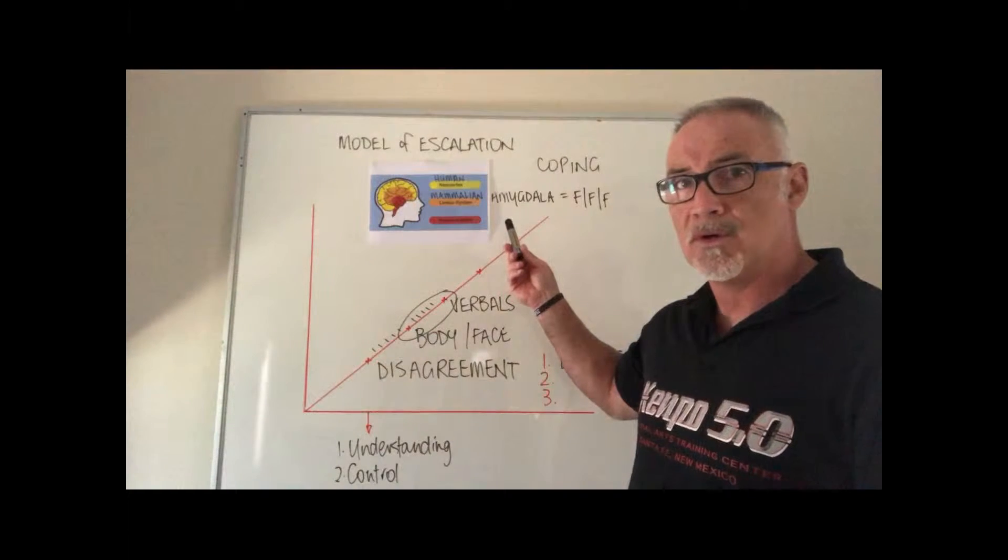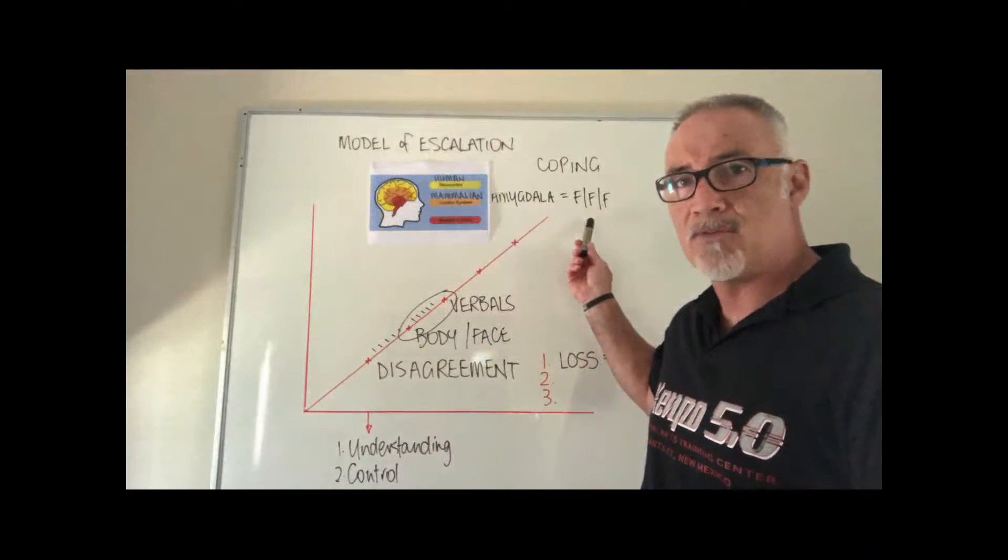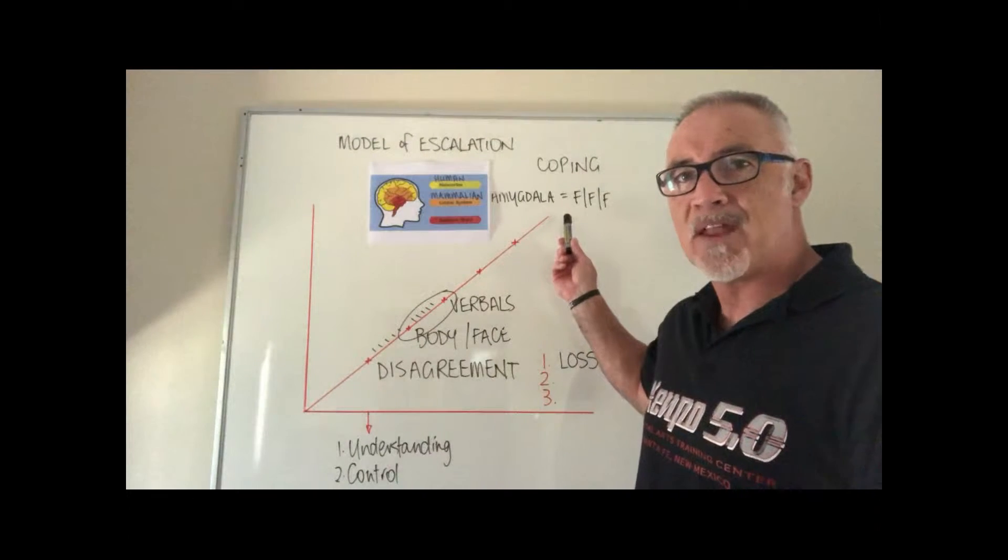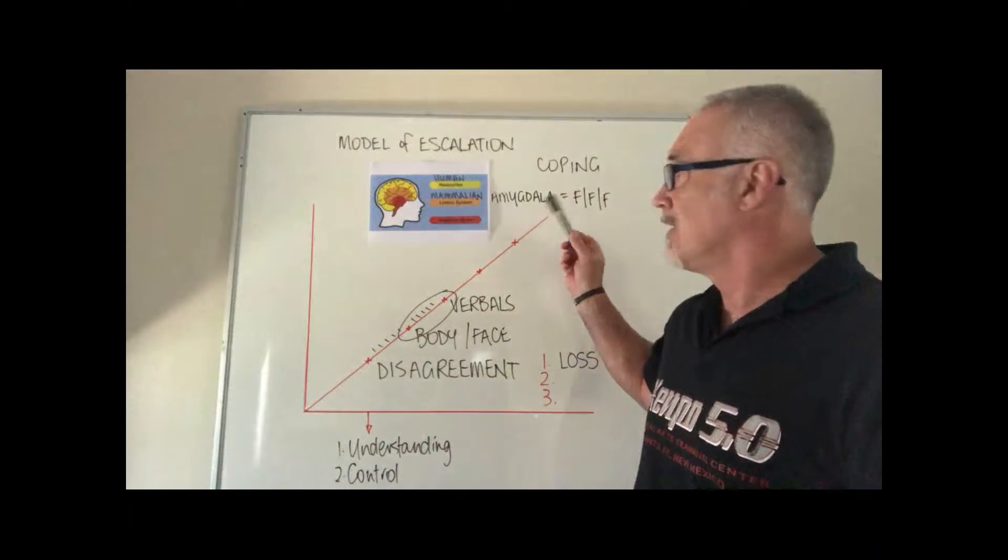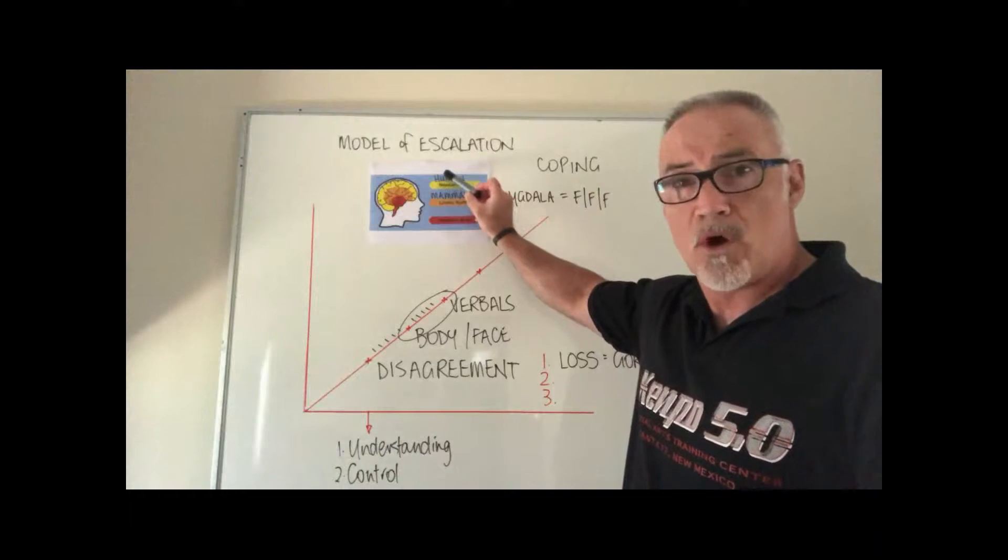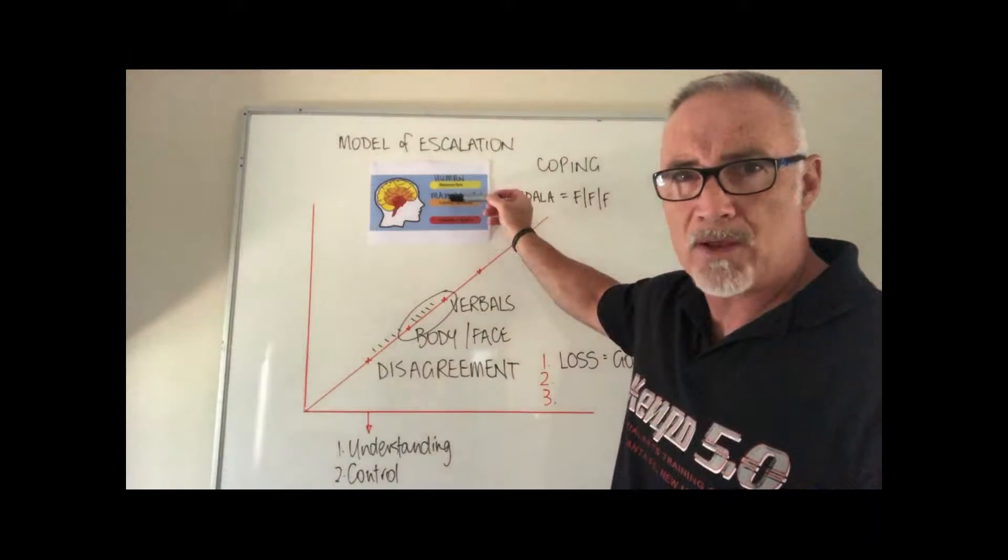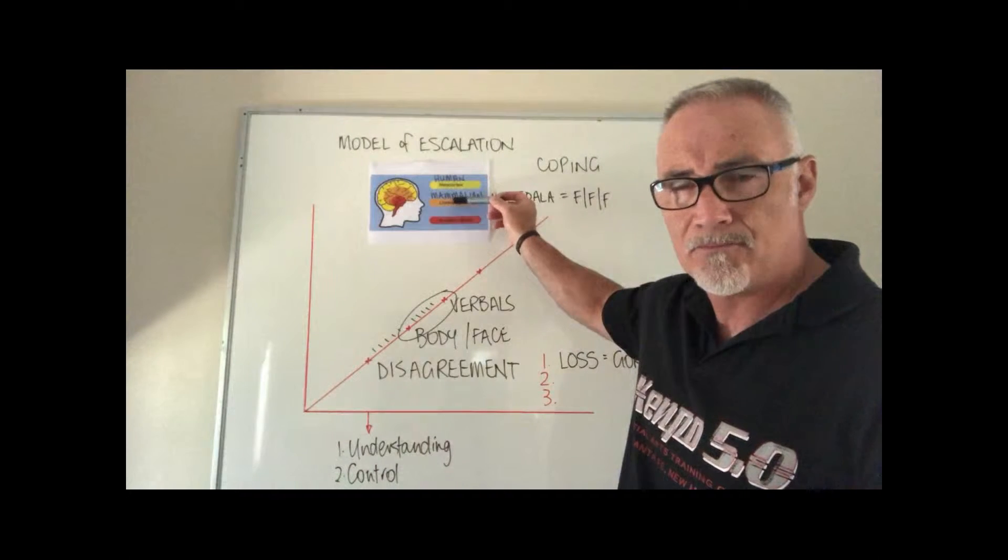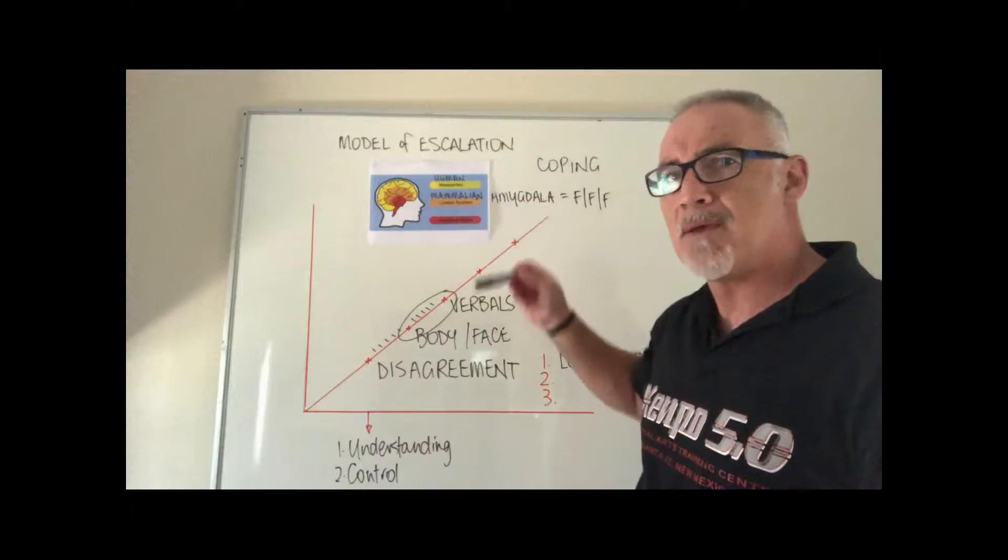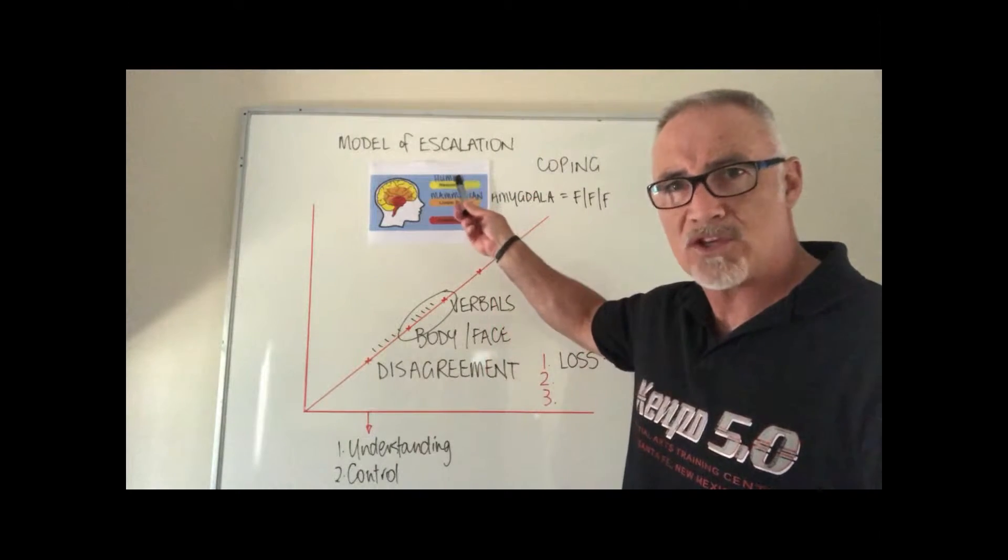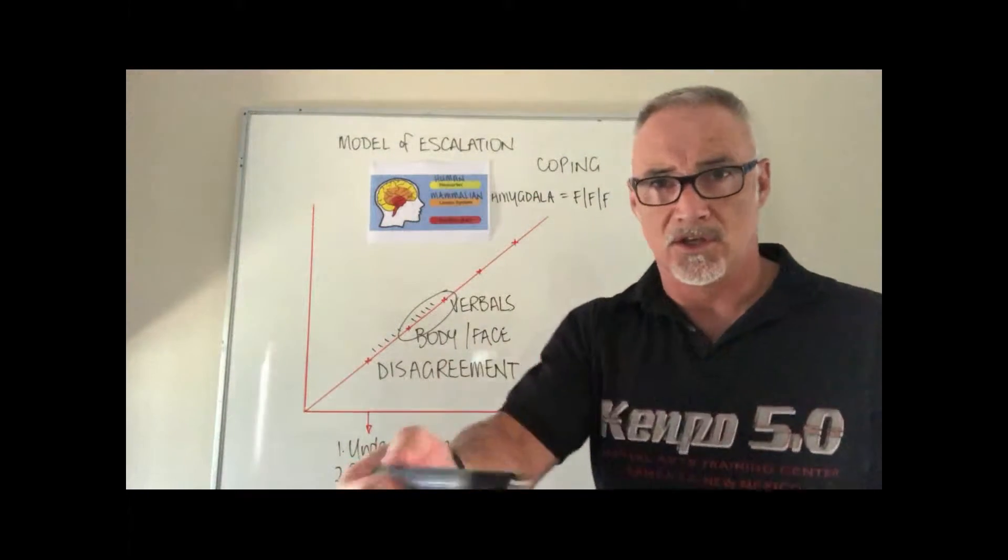Now the danger here is if I present to you as an aggressive person, I might trigger an amygdala response from you that says I'm not safe here, I need to go into fight or flight. As we discussed last time, fight or flight drops you from your rational brain into your mammal brain, which is the emotional brain.